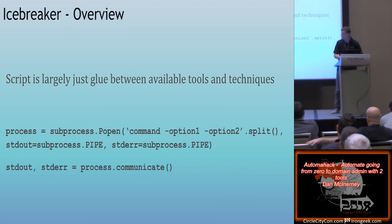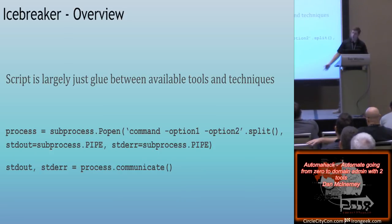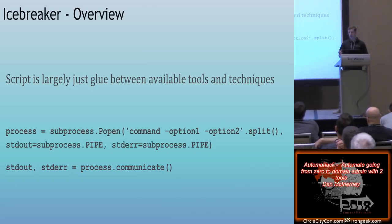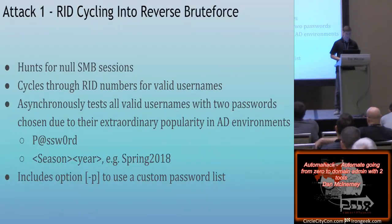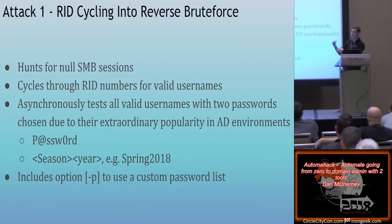Largely the script is just glue between known attacks. There are no novel attacks in this tool. I'm taking all of the best network attacks for getting Active Directory credentials when you don't have access to the environment, and I glued them together. It's about 1,500 to 1,600 lines of code. Although subprocess is the core because I'm calling other tools, there's quite a bit of complexity based on my personal experiences as a pen tester for three years with Fortune 500 companies. It also has async features specifically to speed up the reverse brute force.